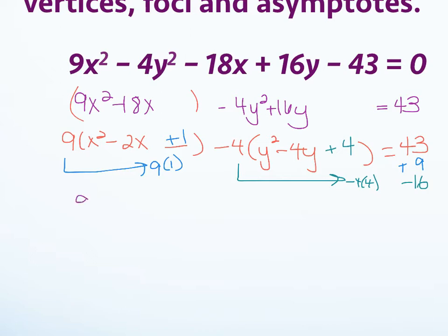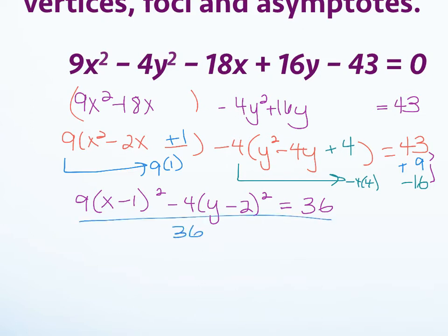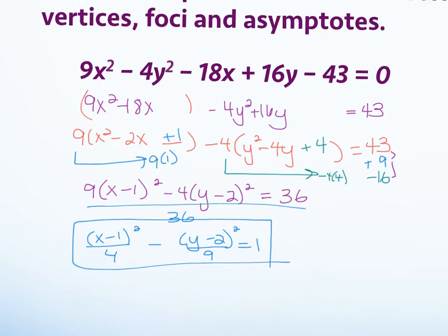After factoring the left side I get 9 times x minus 1 squared minus 4 times y minus 2 squared. On the right side, 52 minus 16 equals 36. One more step to get to standard form: divide everything by 36.